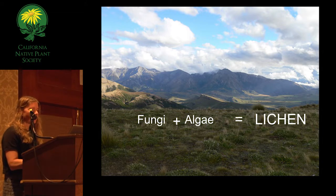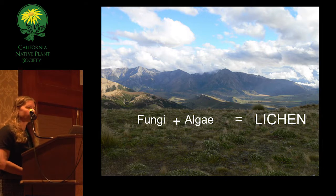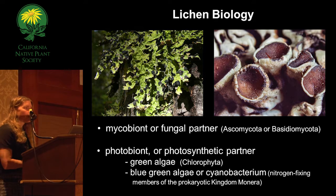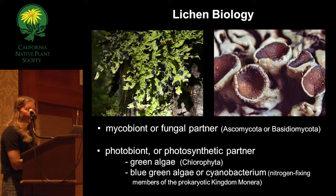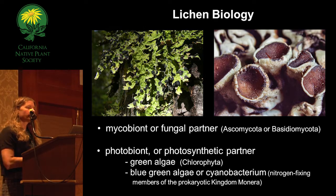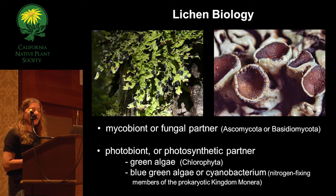A lichen is a combination of a fungus and an alga. The mycobiont or fungal partner is essential for lichen to occur, as well as a photobiont or photosynthetic partner. This photosynthetic partner could be either green algae, blue-green algae, or cyanobacteria. It must have both the fungus and the algae, but it can have more than one algal partner and can change algal partners throughout its lifespan.